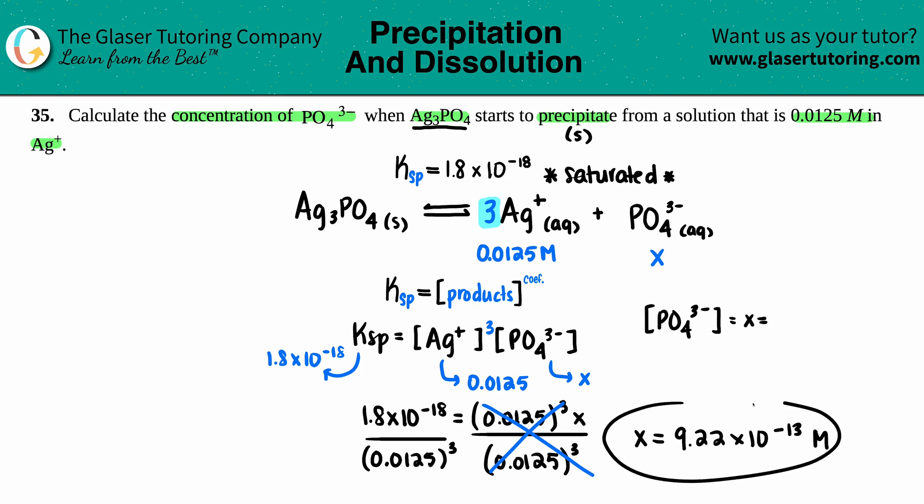And x was 9.22 times 10 to the negative 13th molarity, and we're done. That's the answer.